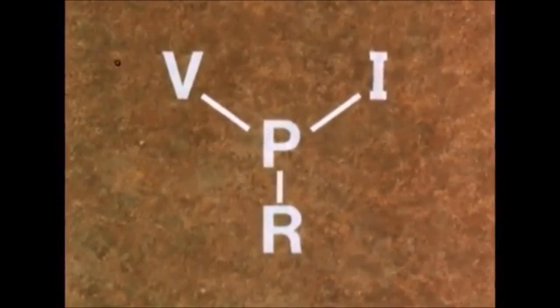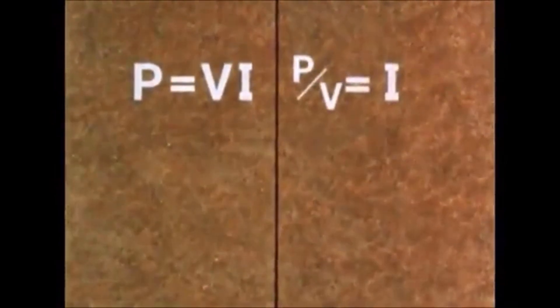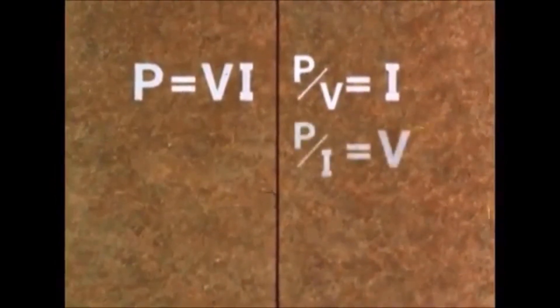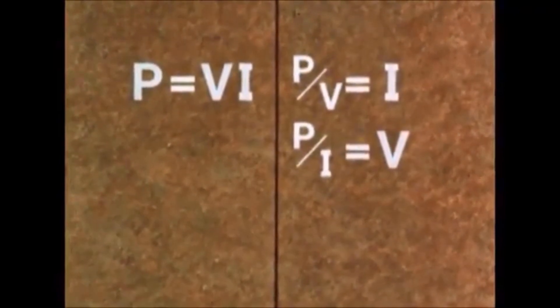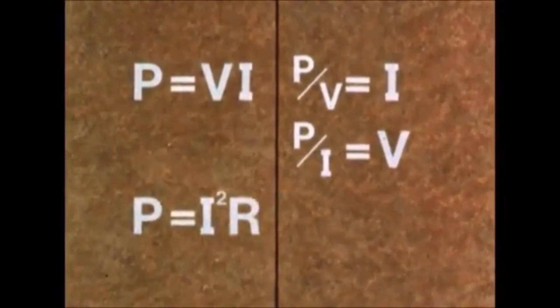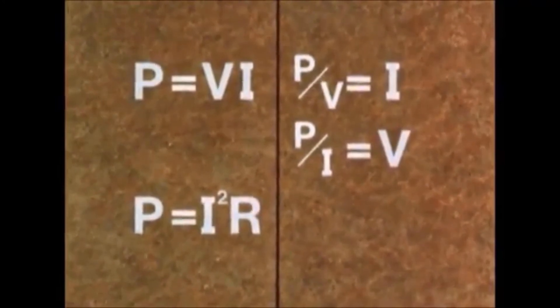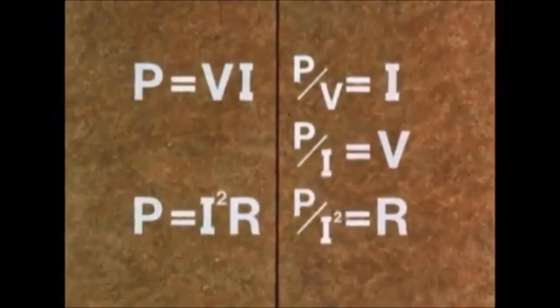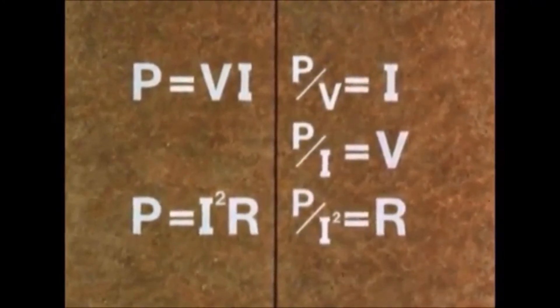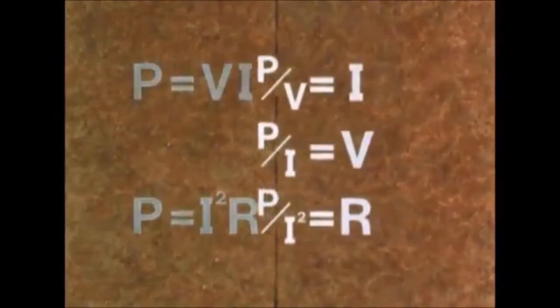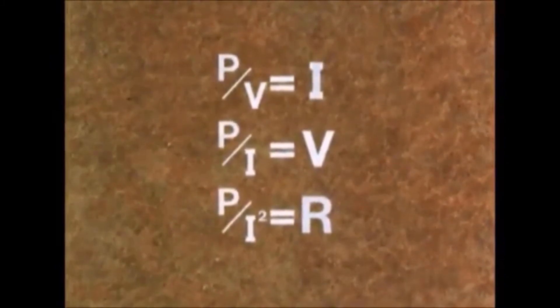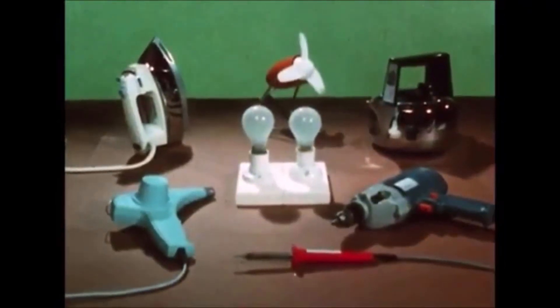Because since P equals VI, then P over V equals I, and P over I equals V. And because P equals I squared R, P over I squared equals R. And we have a formula for I, one for V, and one for R when we know P and one other value. Usually electrical equipment is rated for both voltage and power.